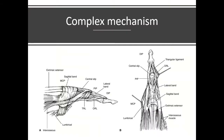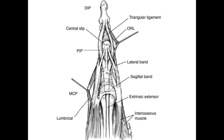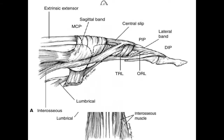The complexities of the extensor system as we enter the digit are far more complex than the flexor tendon system and cannot be covered in a 10-minute talk. The extensors essentially enter the digit through the extensor expansion, and while extending the proximal phalanx, continue as the central slip and the lateral bands, which are joined by the interossei and the lumbricals. Note that the sagittal expansion forms a sling around the proximal phalanx and doesn't actually insert into it, apart from some loose connective tissue — which is ironic, because extension at the MCPs is the main action of the long extensors.